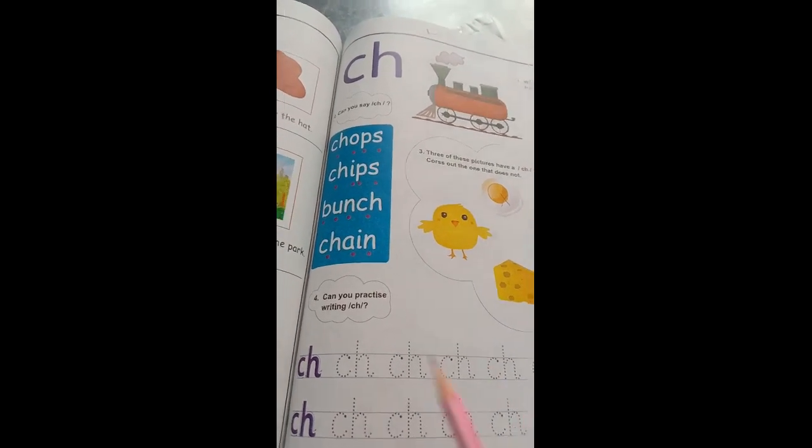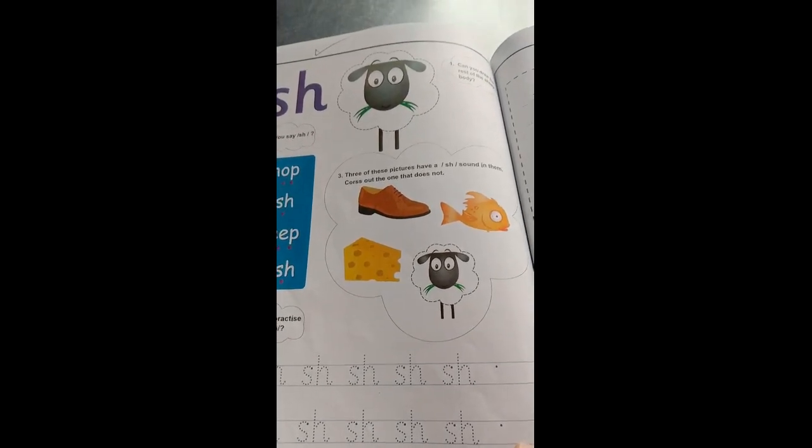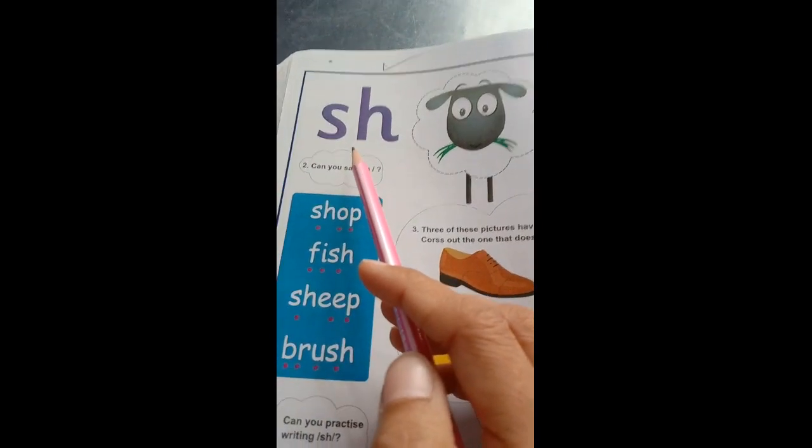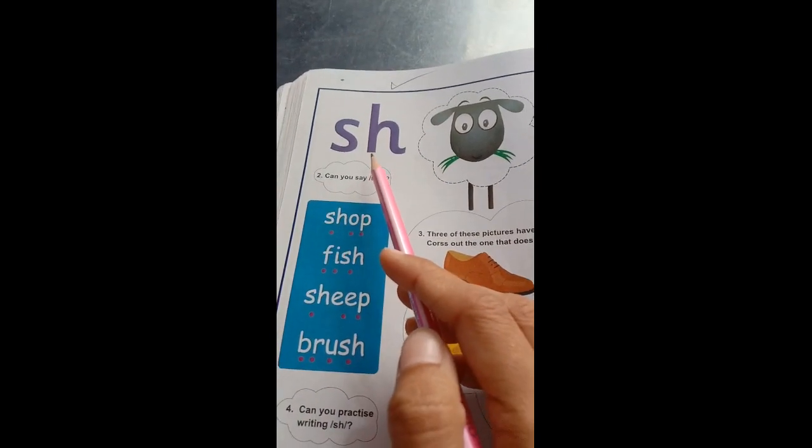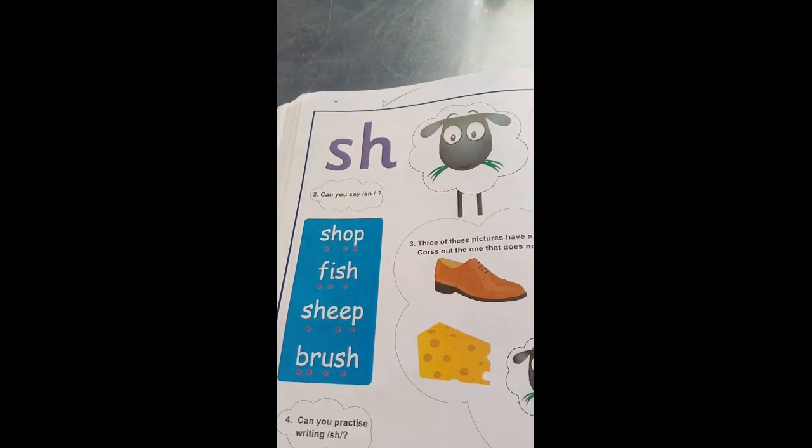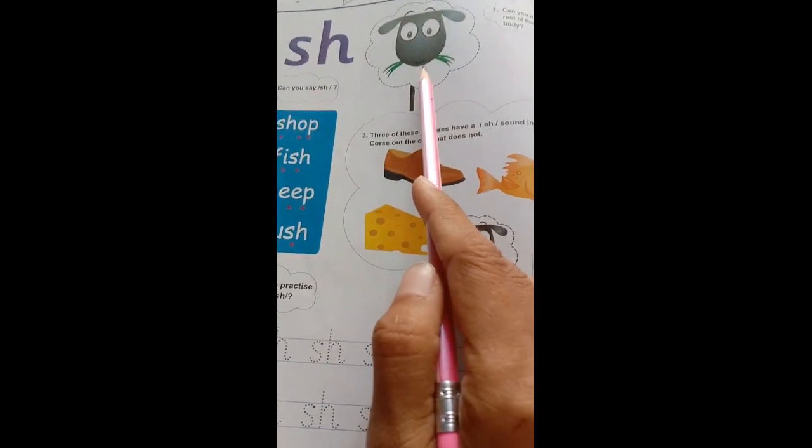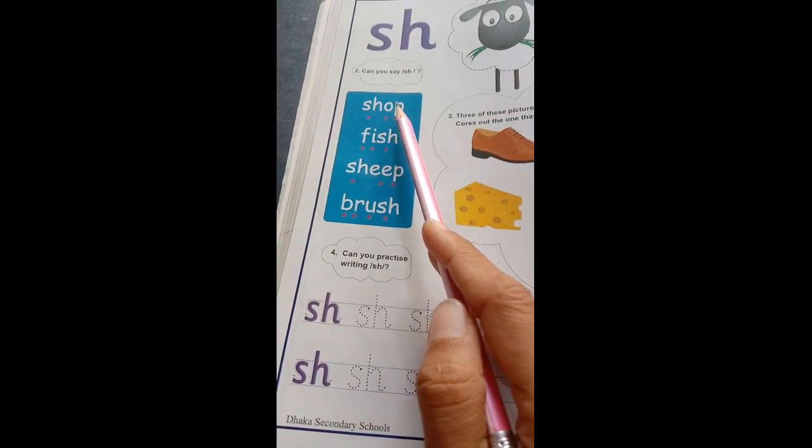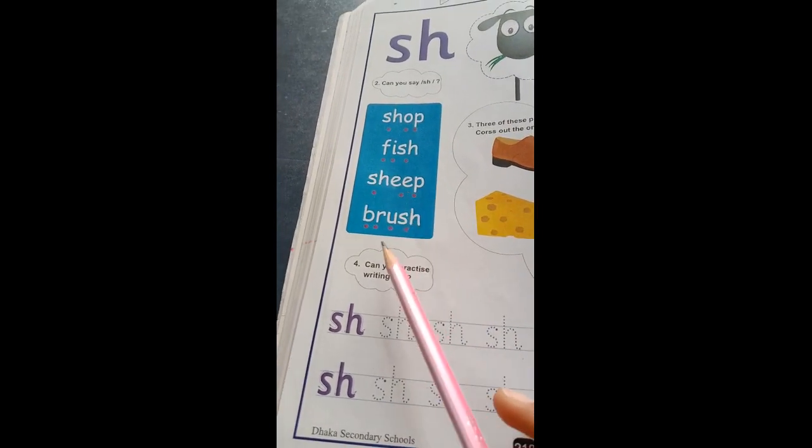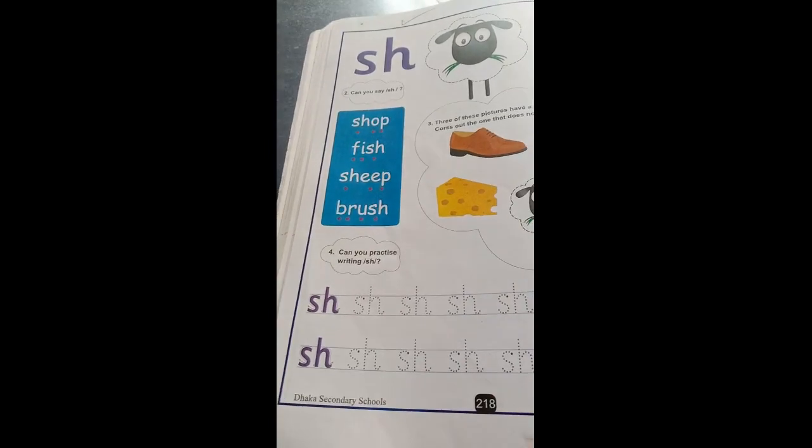Which diagraph is ch, and this is your diagraph on page number 218, ch. It's a sheep, shop, fish, ship, rush. You will complete this one page.